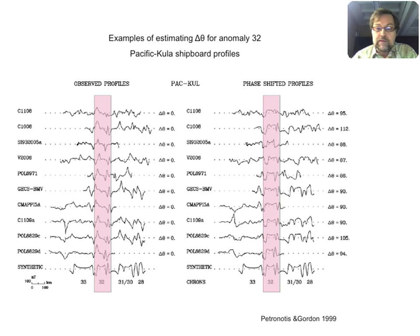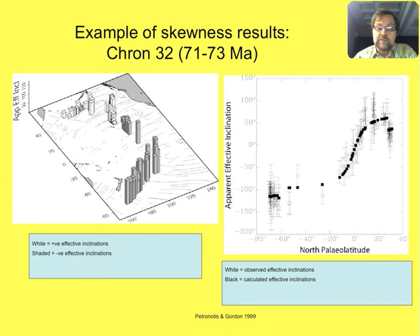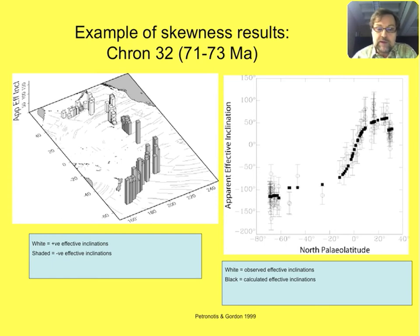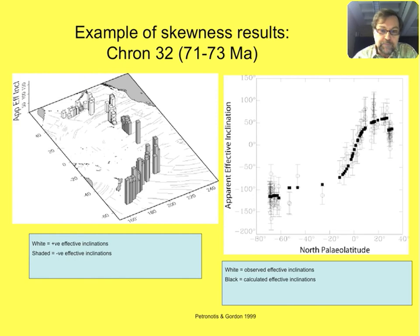This next slide shows an example of results from skewness. Once we've estimated delta theta, the phase shift, from anomalies all over the Pacific plate — everywhere we could find crossings of anomaly 32 — we can do a simple reduction to get the apparent effective inclination. The magnitude of the apparent effective inclination is shown by the height of the little rectangular prisms. Where they're white, those are positive inclinations as expected for normally magnetized seafloor in the northern hemisphere. Farther south, we see shaded ones that are negative values, as expected during normal polarity time in the southern hemisphere.